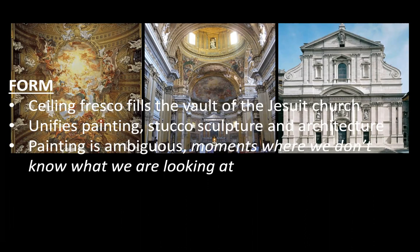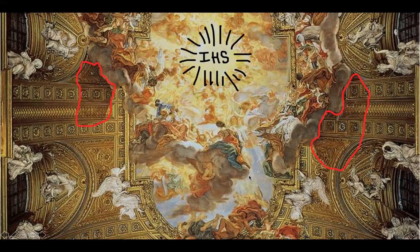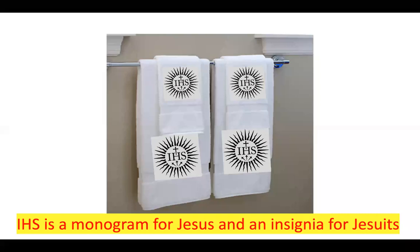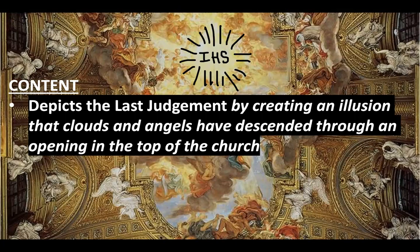Overall the painting is really ambiguous — there are many moments you really can't tell what's happening, but if you're a believer and you understand it, it makes sense. Go ahead and write on your painting the initials IHS — this is a monogram for Jesus and an insignia for the Jesuits, a Latin-Greek interpretation of Jesus's name. This monogram is repeated throughout the church.